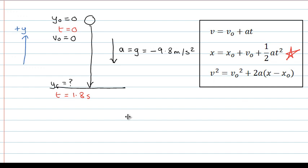So we can fill in the numbers. So our final displacement, y final, will equal our initial displacement, which is zero, plus the initial velocity, which is zero, plus a half times minus 9.8 times 1.8 squared.